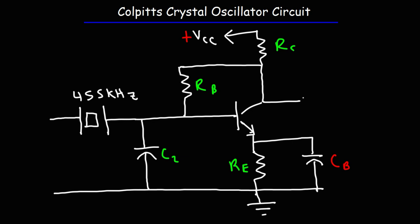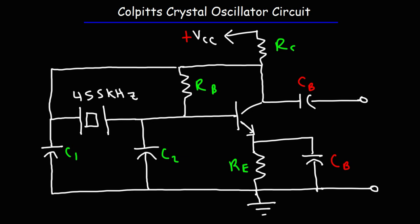We're going to have another bypass capacitor which goes to the output. I'm going to have another capacitor connected on the other side of the ceramic oscillator, and this is going to be C1. C1 is also going to be connected to the collector of the transistor. So, this is the base of the transistor, this is the collector, and this is the emitter. The specific transistor I used when I tested this circuit was the 2N4401 NPN transistor.